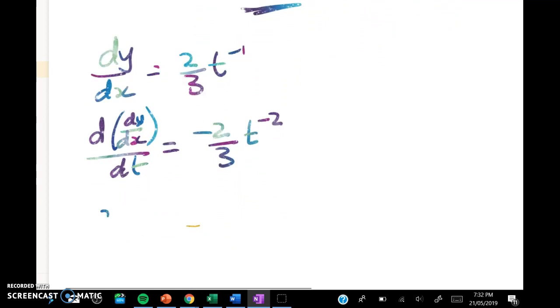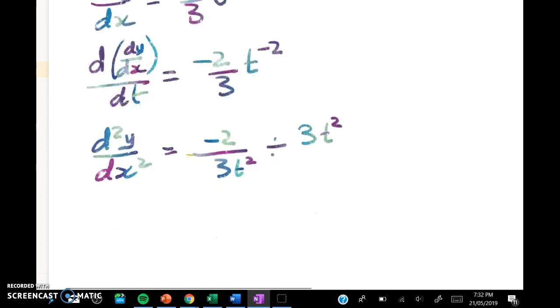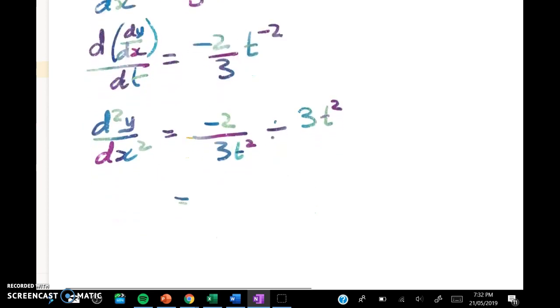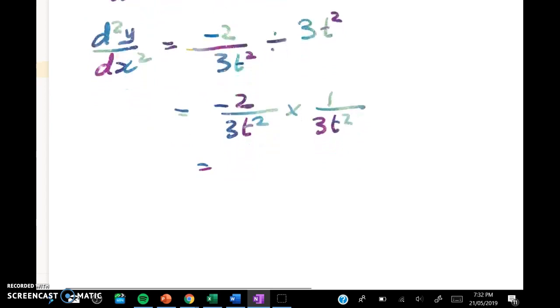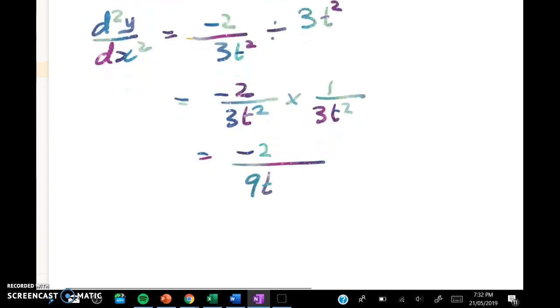So my second derivative d²y/dx² is equal to this negative 2 thirds over t² divided by dx/dt. But that was 3t². So all up we get negative 2 over 3t² times 1 over 3t² which gives me negative 2 over 9t to the 4. So we've done all the hard work.